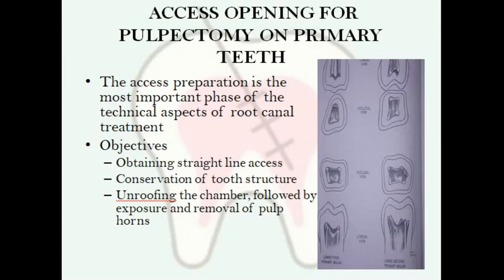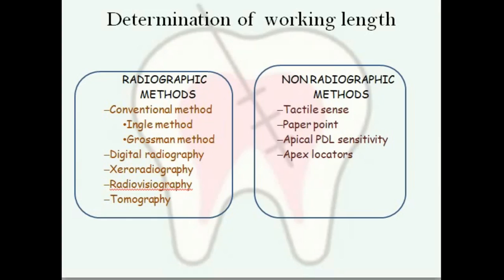Access opening is one of the most important phases of root canal treatment, as this is where you recognize all the canals — sometimes there are three, sometimes four. The objectives are: obtaining a straight-line access, removing all the carious part without leaving anything behind, conservation of tooth structure as much as possible, de-roofing the pulpal chamber, and then exposing and removing the pulpal horns.